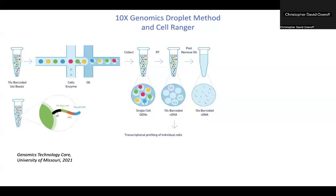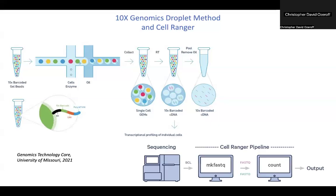10x Genomics offers a set of analysis pipelines called CellRanger. We will be using the CellRanger count software during day seven of the workshop, which essentially inputs a raw FASTQ file and performs alignment, filtering, barcode counting, and UMI counting.